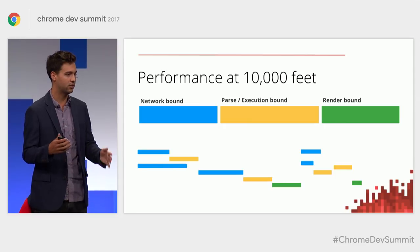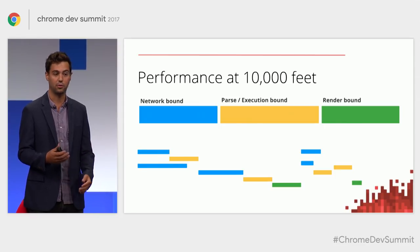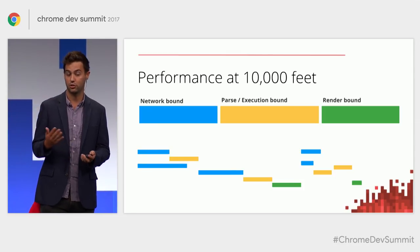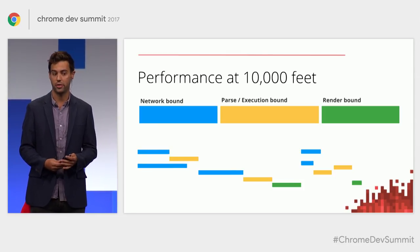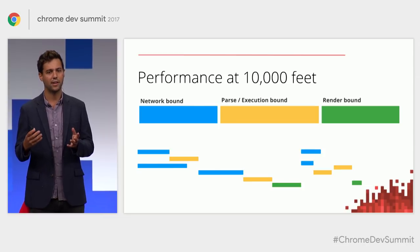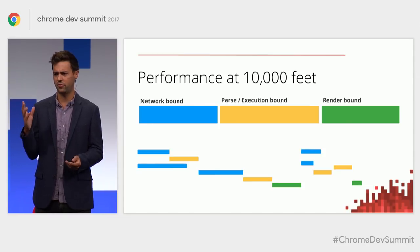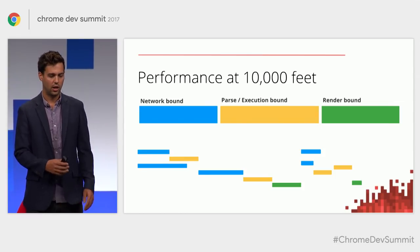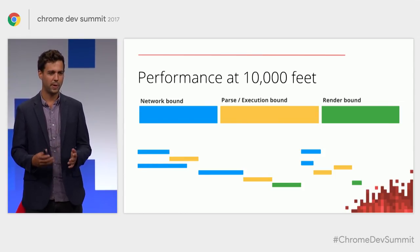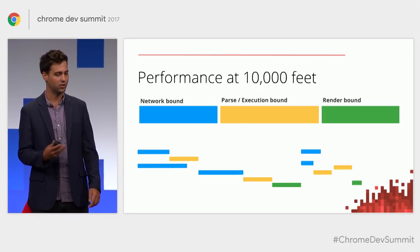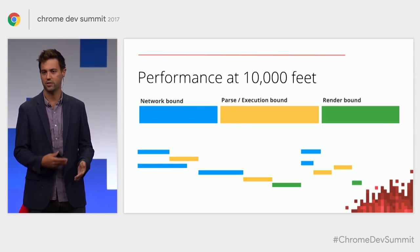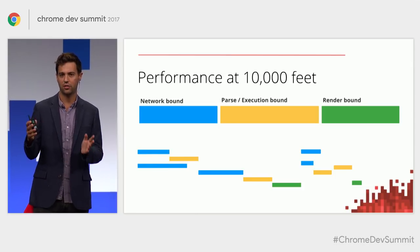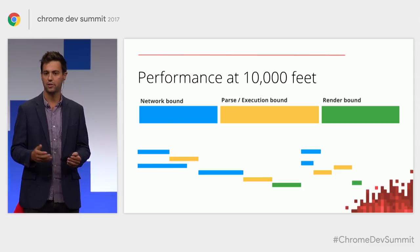Network-bound is when you go to a web page and have to download files — how fast they get to your user determines how fast you can run them. Once you have those files, you enter a parse and execution phase. And finally, when your files have run, you drop into a render phase where the page takes all the side effects of your operations and paints them onto the screen.